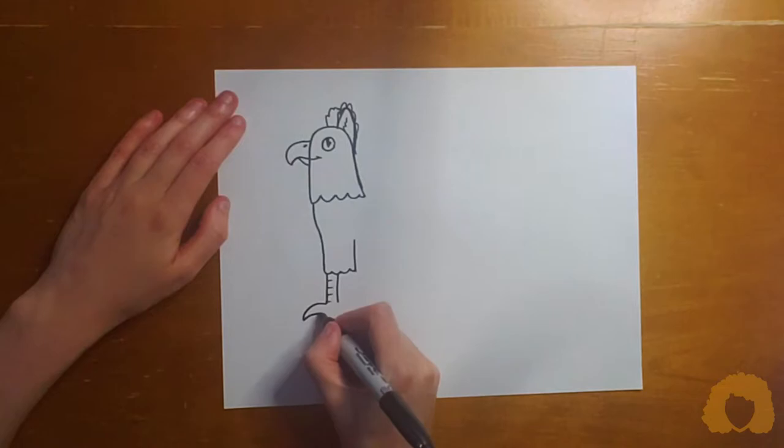Then I'm going to do a rainbow and a smaller rainbow for the claws. In fact, I can even do another rainbow half hidden if I want.